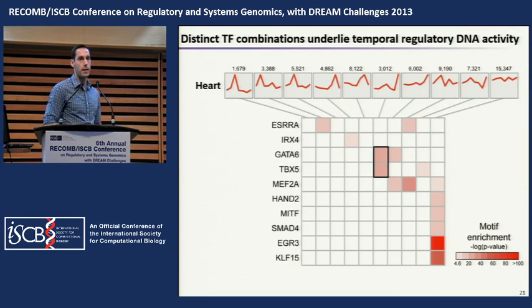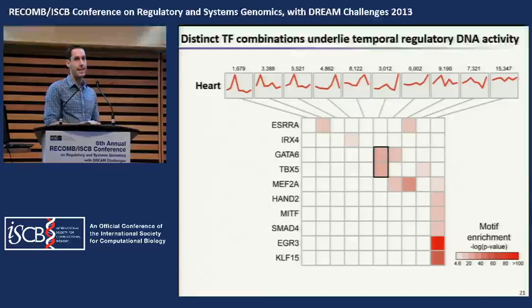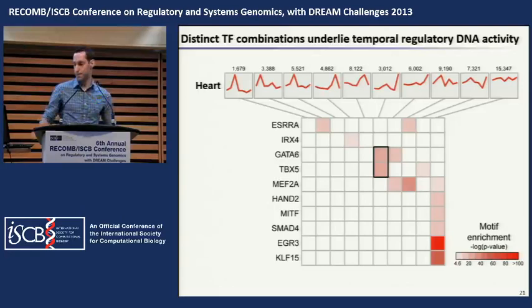Looking at transcription factors known to be involved in the development of specific tissues, we find their recognition sequences enriched in tissue-specific DHSs, but also enriched in DHSs with specific temporal patterns. For example, GATA6 and TBX5 are known to activate certain cardiac regulatory elements together, and we find their recognition sequences enriched together in DHSs with a particular temporal pattern.